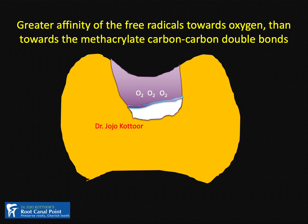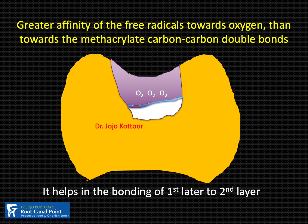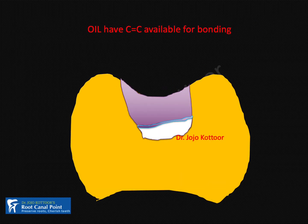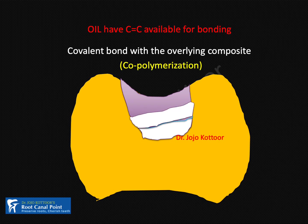Is the oxygen inhibitor layer good or bad? Definitely it is good for the first layer, because it helps in the bonding of the first layer to the second layer. The oxygen inhibitor layer has many carbon-carbon double bonds because the methacrylate did not react with the free radical — this reaction was inhibited by oxygen. When you place the second layer and cure it, you get a covalent bond with the overlying composite — a copolymerization of first and second layer — and both act as a single homogeneous composite.